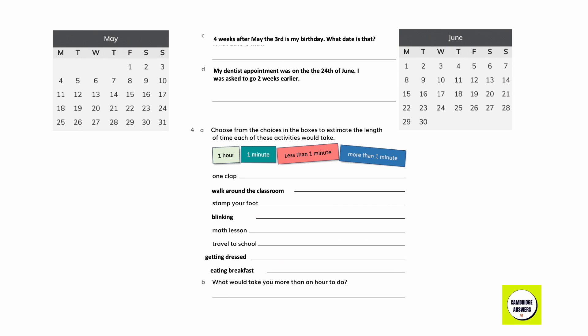Four weeks after 3rd May is my birthday. What date is that? We know that seven days equals one week. Counting four weeks forward from 3rd May — one week, two weeks, three weeks, four weeks — the answer is 31st May.